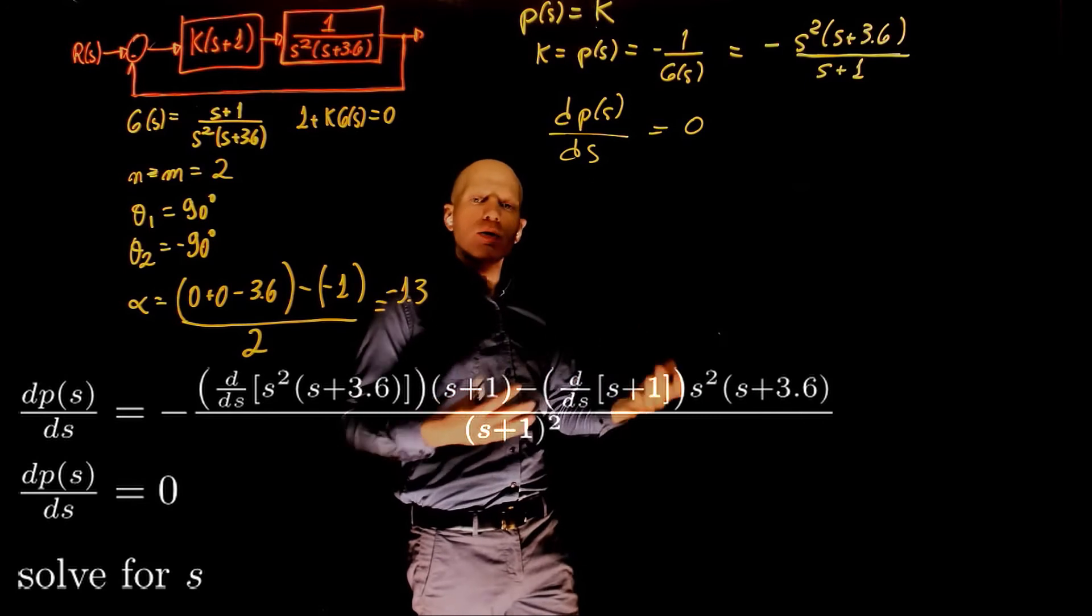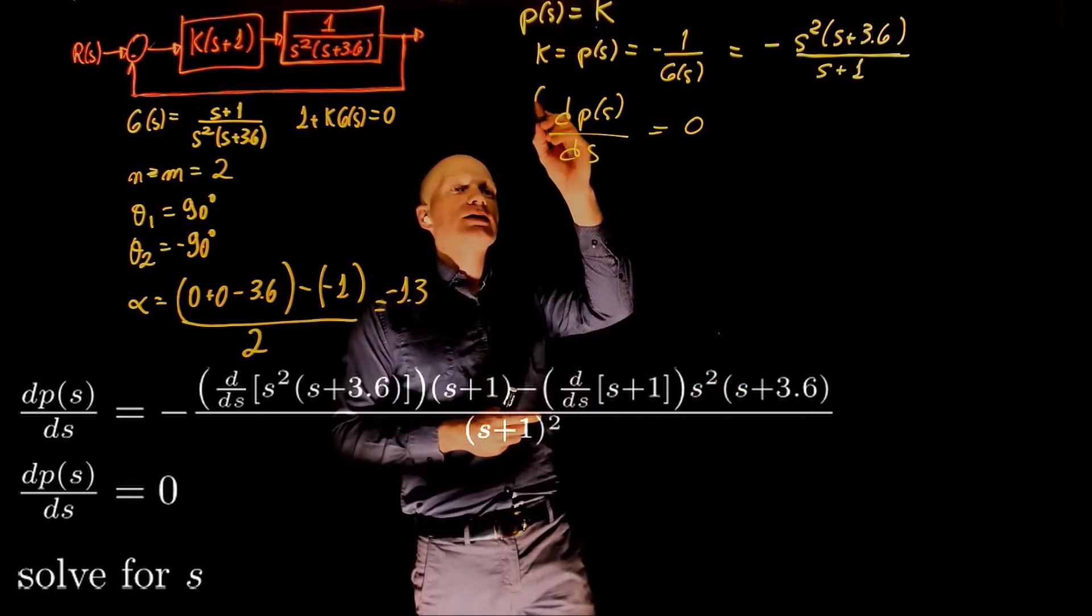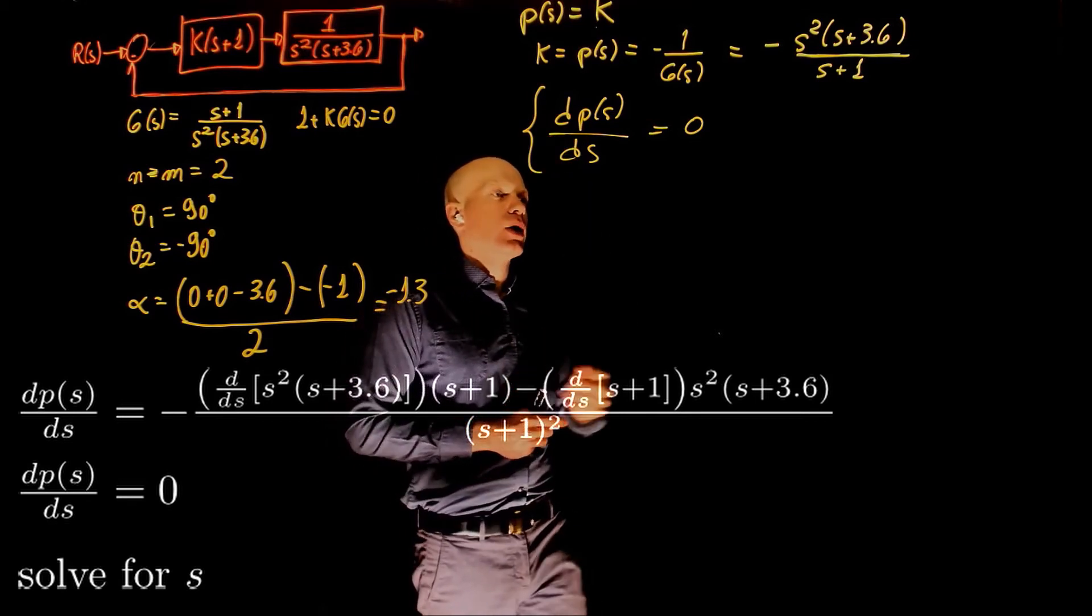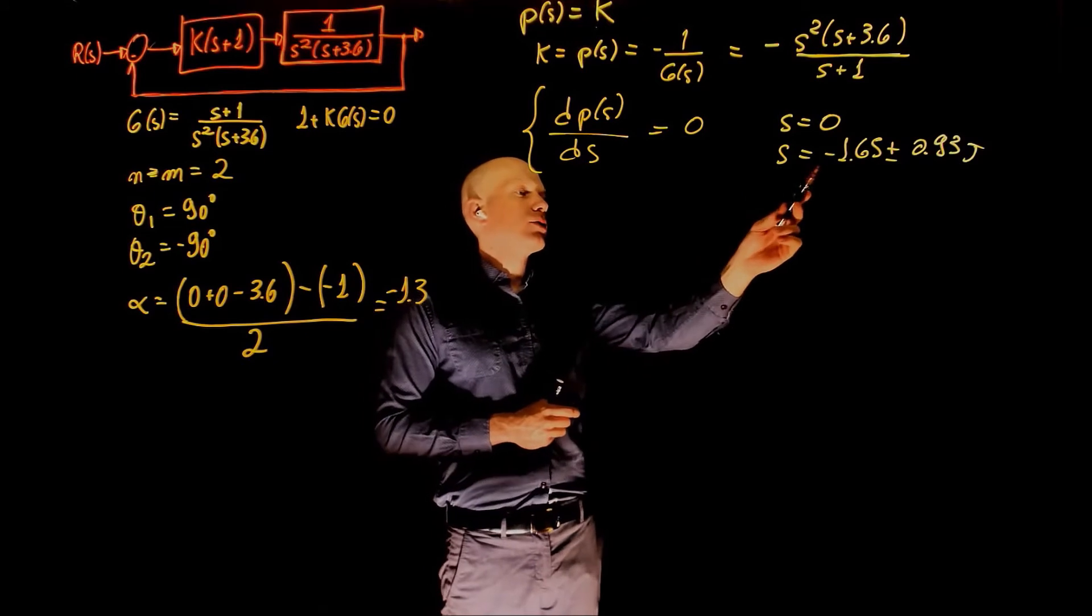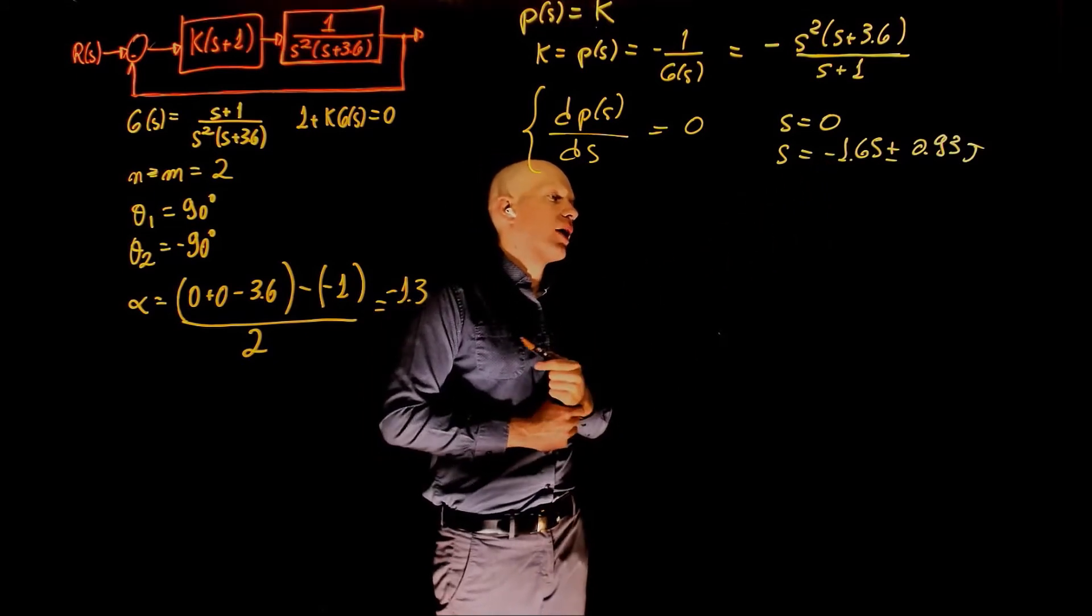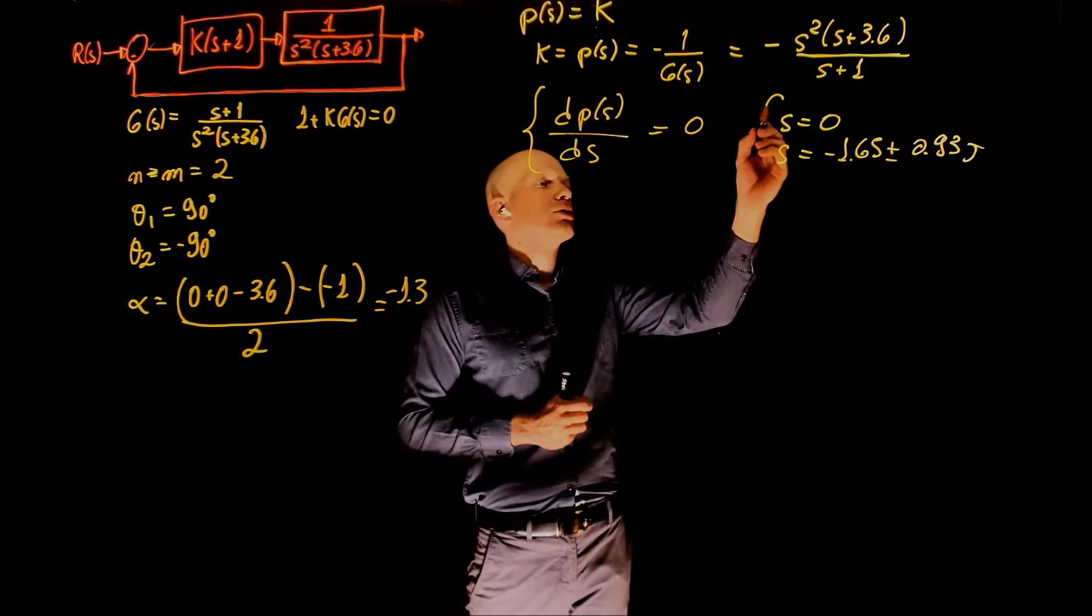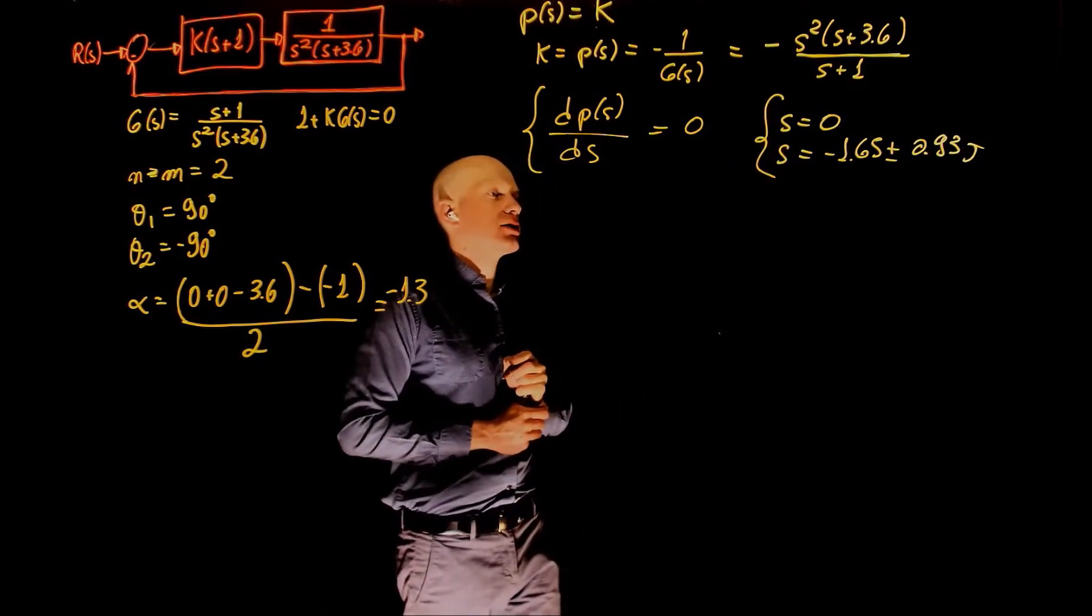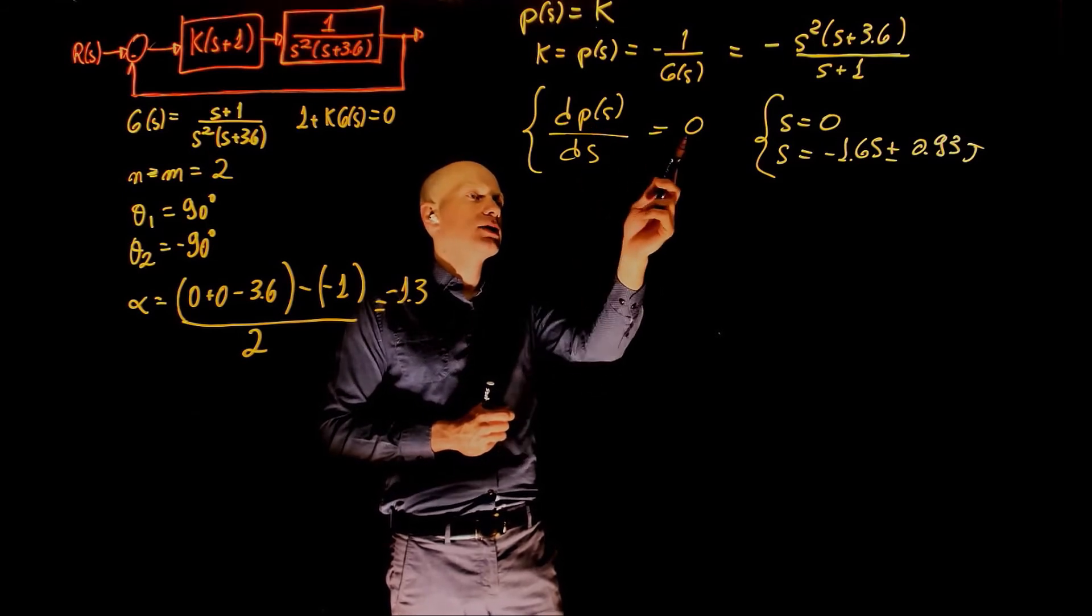This is simply calculus, very simple calculus. I'm going to skip that step and just give the values of s that satisfy this equation. And those values are s equals to 0, and s equals to negative 1.65 plus minus 0.93j. So these are the values of s that satisfy the derivative of p of s with respect to s equal to 0.